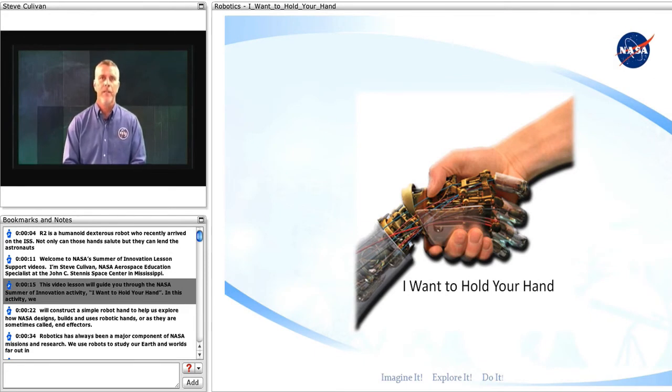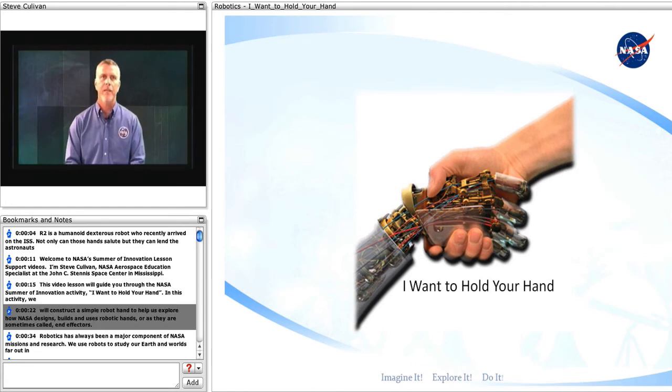In this activity, we will construct a simple robot hand to help us explore how NASA designs, builds, and uses robotic hands, or as they're sometimes called, end effectors.